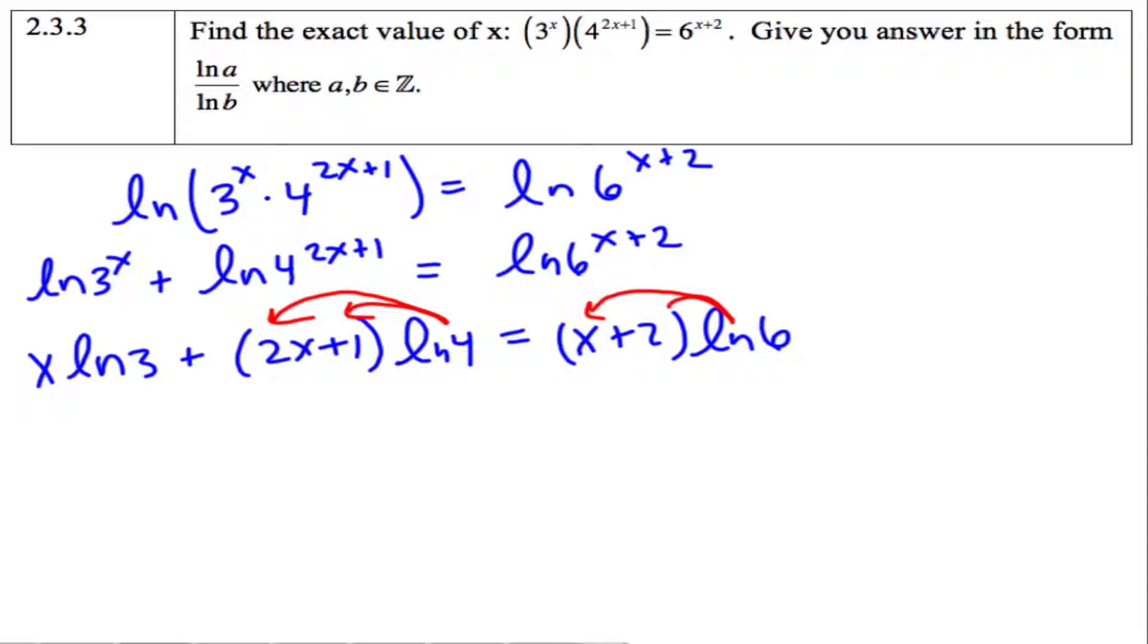And we'll get a lot of terms with x's and a lot of terms without. So x ln 3 plus 2x ln 4 plus ln 4 equals x ln 6 plus 2 ln 6.